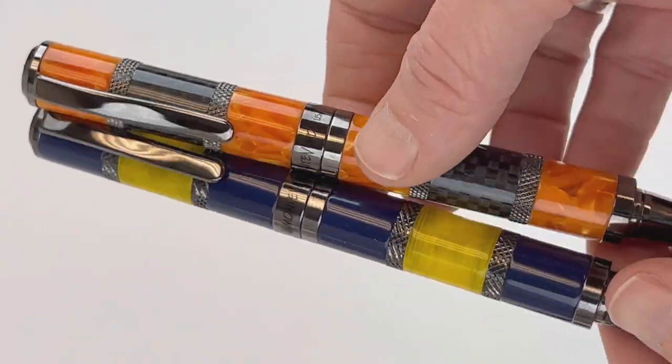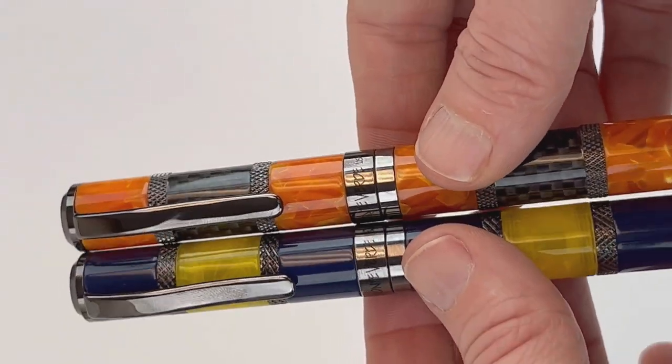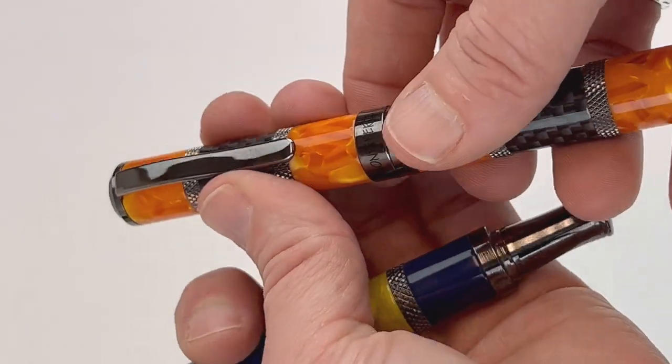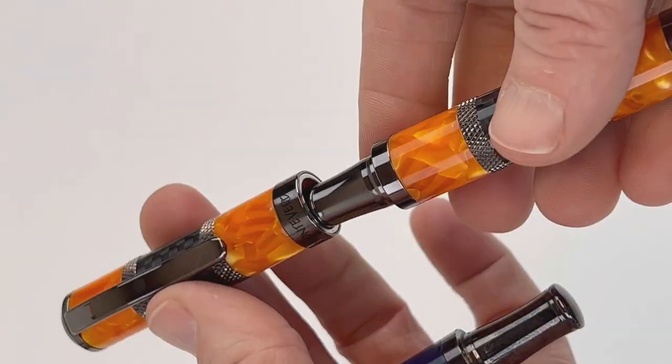You'll notice, if you have more than one regatta, that that magnetic closure is evident when you have the pens side-by-side. It's kind of an interesting and fun aspect of these pens.